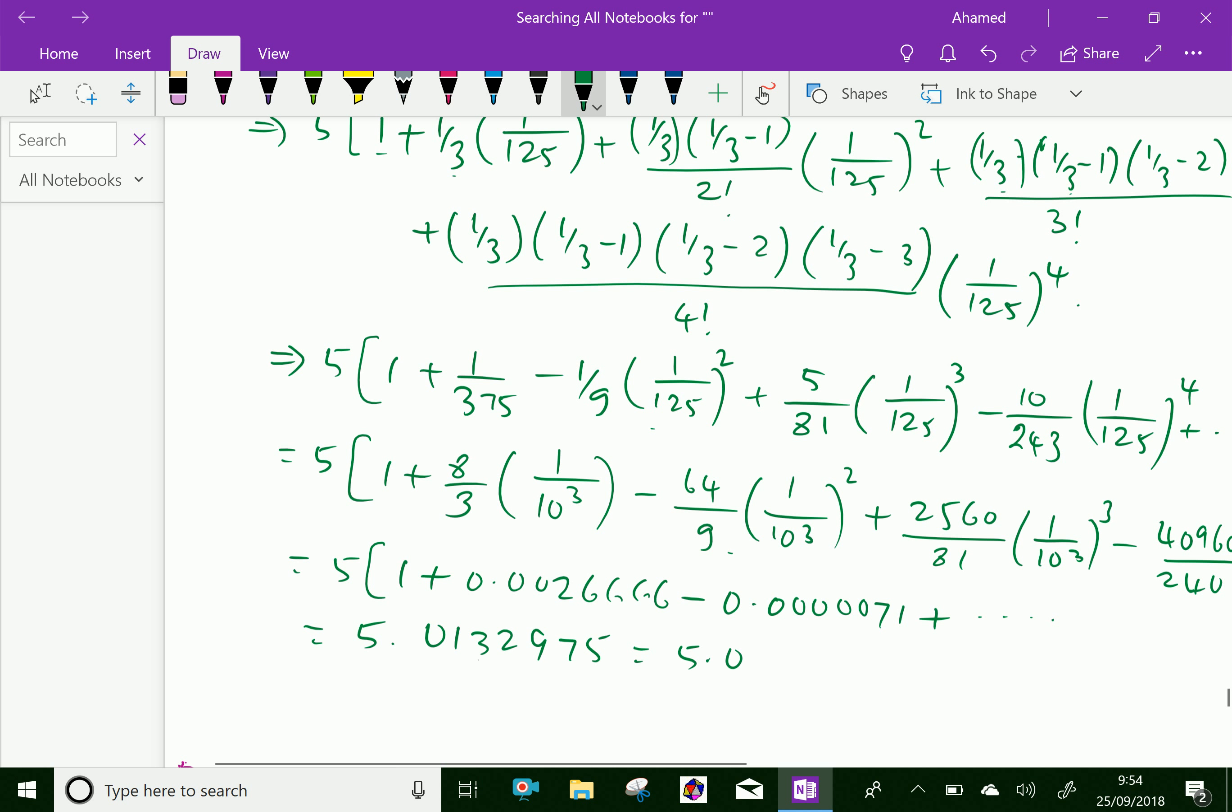Here 5 decimal places we need, so it is equal 5.01329. The 6th place is 7, so you have to add 1, giving 5.01330. That is the 5 decimal places.